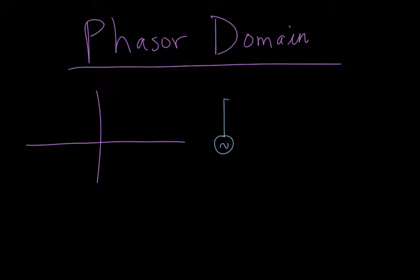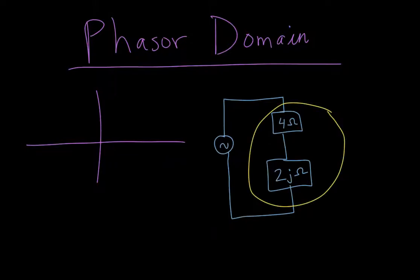Let's say we have an AC voltage, and then we have a resistor, let's say it's 4 ohms, and then we have an inductor that has the magnitude of impedance of let's say 2j ohm. Positive and imaginary means an inductor, negative imaginary means a capacitor.